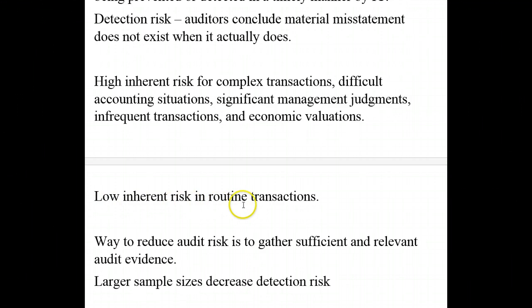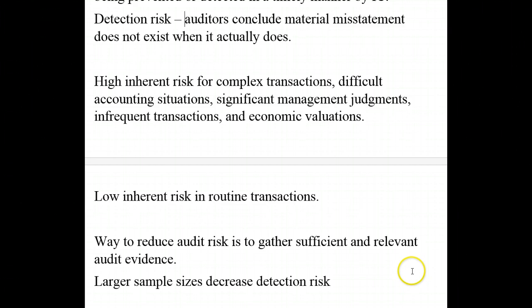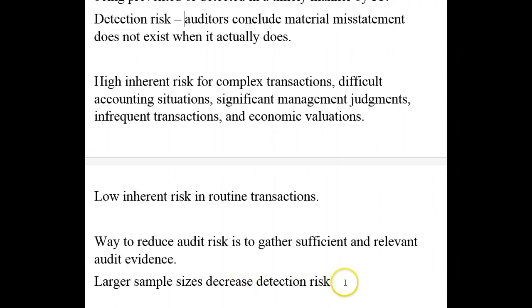We have a lower inherent risk in routine transactions, because not only is a company performing those on a regular basis, but also we can usually audit a sample of them and draw a conclusion from the sample based on the whole population. To reduce audit risk, gather sufficient and relevant audit evidence. Larger sample sizes will decrease detection risk; smaller sample sizes will increase detection risk.